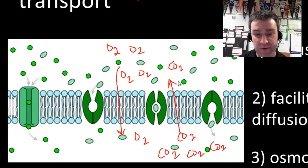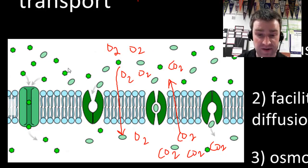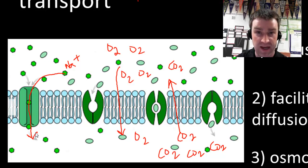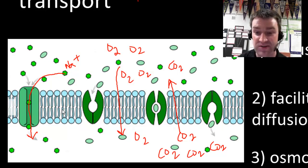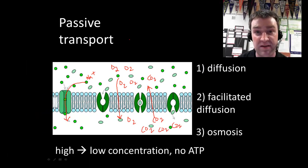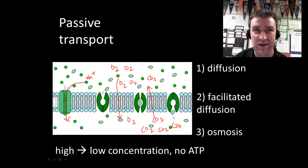Facilitated diffusion involves the natural movement of particles from high to low concentration, but these particles have to go through a transport protein. These would be polar molecules or ions — for example, Na+ moving through a sodium channel transport protein would be facilitated diffusion. The transport protein is not spending energy; it's just letting the particles do what they want to do. Osmosis is the facilitated diffusion of water in particular — water balance is very important to cells, so we give its natural movement its own name, but it's really just a form of facilitated diffusion.